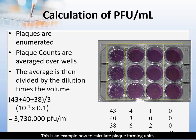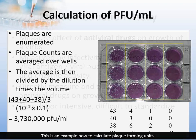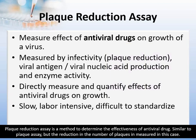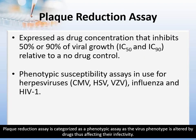This is an example of how to calculate plaque forming units. Plaque reduction assay is a method to determine the effectiveness of antiviral drugs. Similar to plaque assay, but the reduction in the number of plaques is measured. Plaque reduction assay is categorized as a phenotypic assay, as the virus phenotype is altered by drugs, affecting their infectivity.